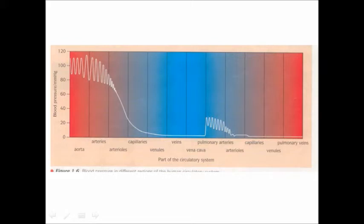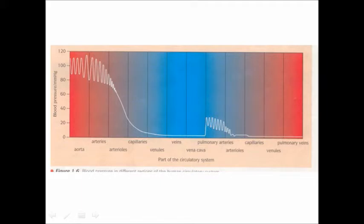This diagram shows the changes in blood flow as the blood flows away from the heart and around the body. You can see on the left that the pressure in the aorta is much higher than it is as the blood passes away from the heart through the arteries, arterioles, and eventually into the veins. About halfway along, the blood returns to the heart through the vena cava and enters the pulmonary arteries, giving a mirror image — but much smaller — of the pressure changes found in the aorta.